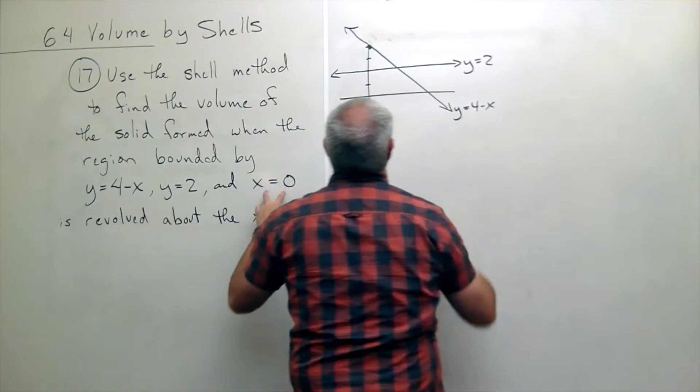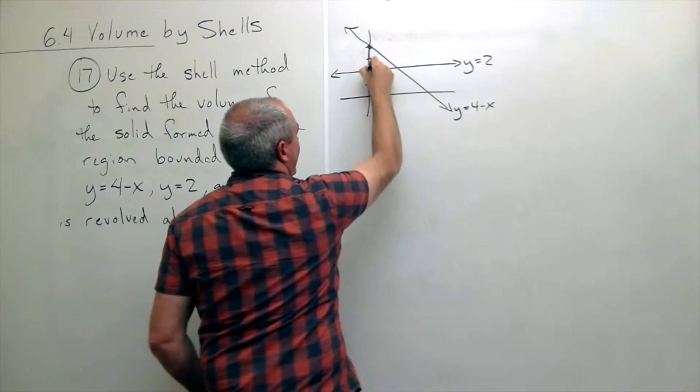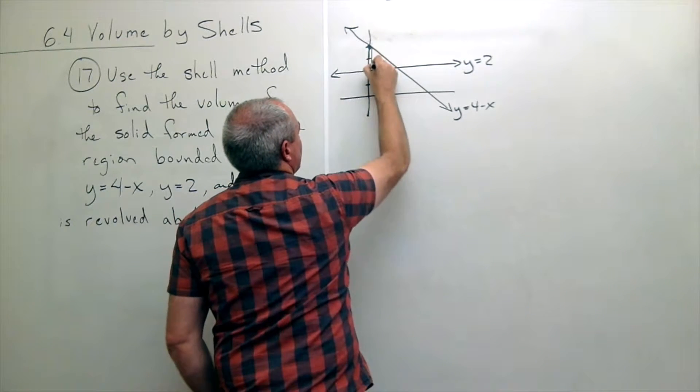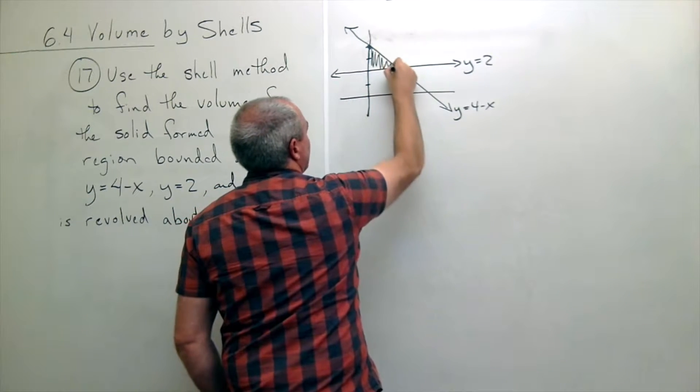and then finally we get x equals zero, which is just our y-axis, and so here's our little region that's bounded.